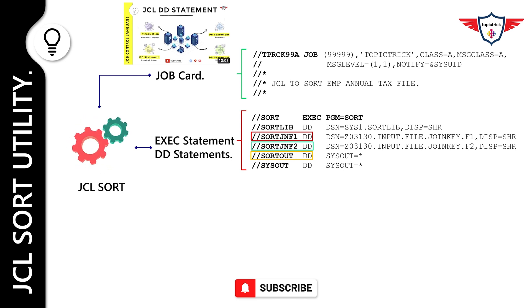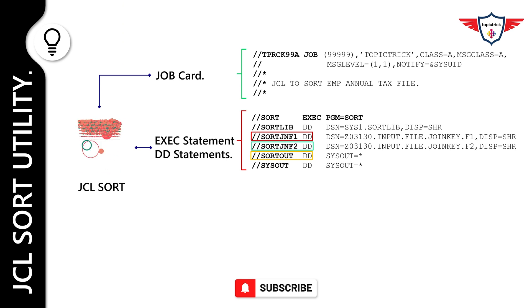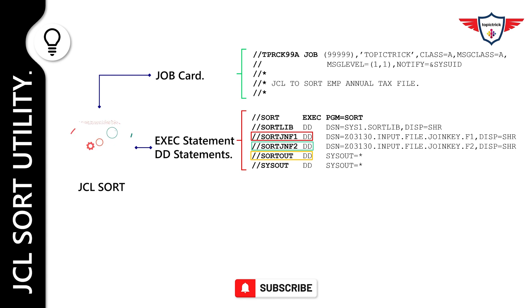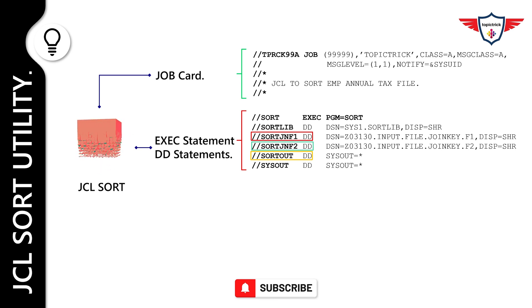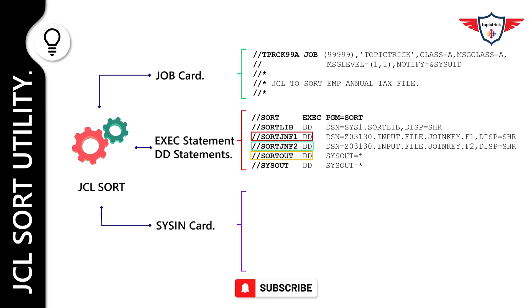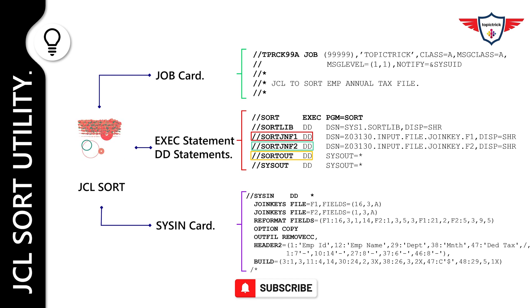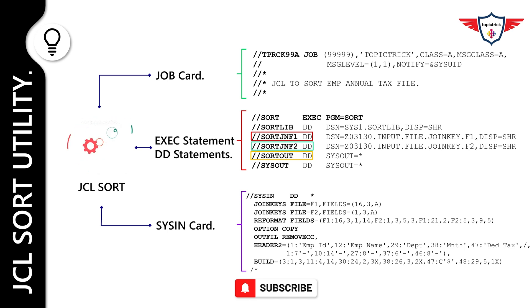I would like to underline the important DD statements here. The first ones are SORTJNF1 and SORTJNF2, which are DD statements used to specify the files that will be used to perform the join operation. The second DD statement is SORTOUT. The SORTOUT DD statement specifies the sorted output file, that is the report file. Finally, the last important section is the control card, that is SYSIN. The control statements are used to provide join criteria. You can specify different control statements to sort, merge, copy, or reformat records.